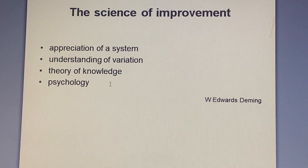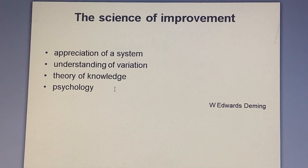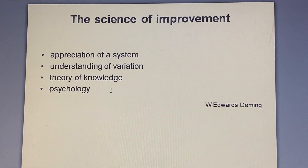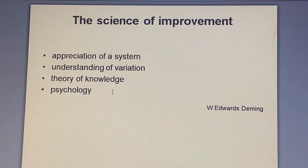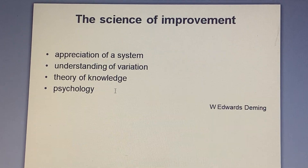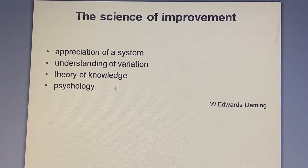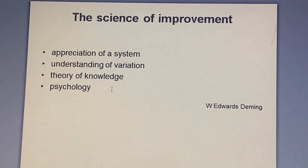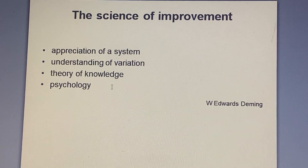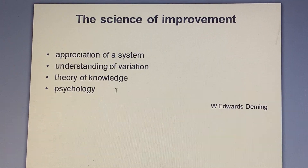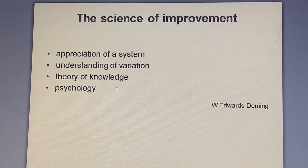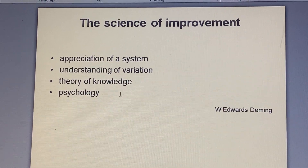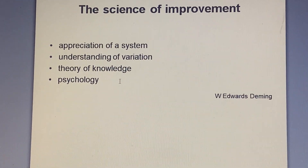The fourth point is psychology. This is also a very important point in the science of improvement. Psychology means you have to understand that in a system multiple different types of individuals are working and they are part of that system. Every person's psychology is different and they impact the system's results. You have to acknowledge that the psychology of different people working in a system will impact the system or the product of the system.